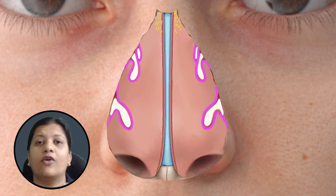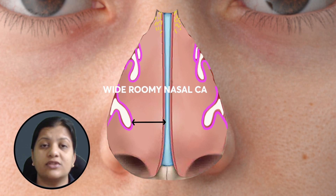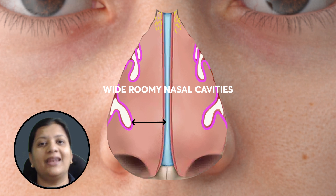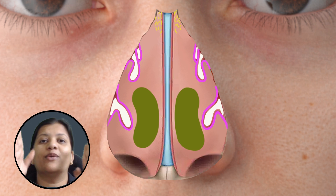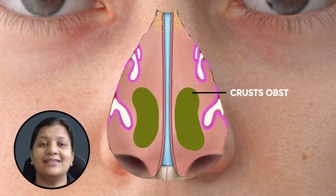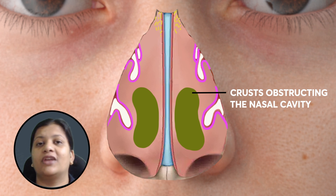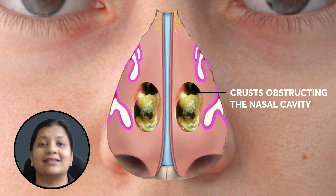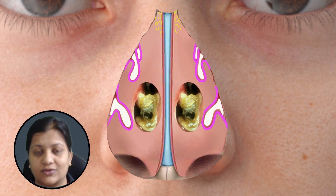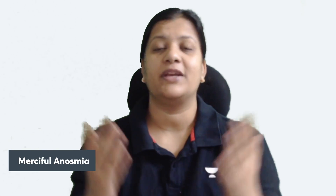Once there is atrophy of all the structures inside the nose and they shrink in size, you get wide roomy nasal cavities. When air current goes through wide roomy nasal cavities, humidification of the air is lost, resulting in dry crusts that form in the nose. These crusts are extremely foul smelling, but the patient himself cannot smell this foul smell — the people around can. This condition is called merciful anosmia.